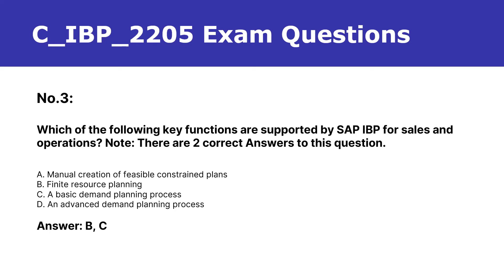Number 3. Which of the following key functions are supported by SAP IBP for sales and operations? Note: there are two correct answers to this question. A. Manual creation of feasible constrained plans. B. Finite resource planning. C. A basic demand planning process. D. An advanced demand planning process. Answer: B, C.